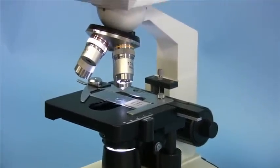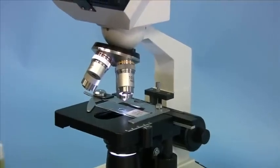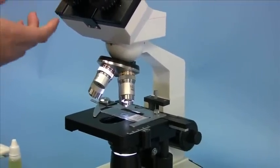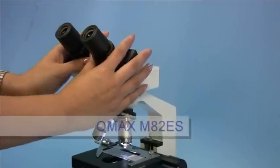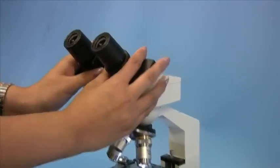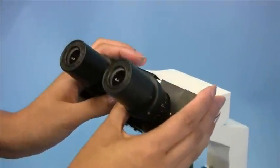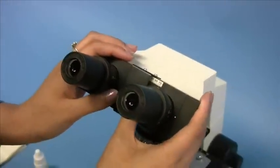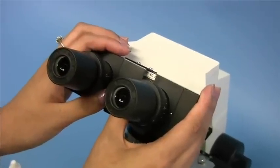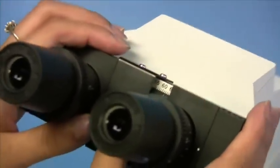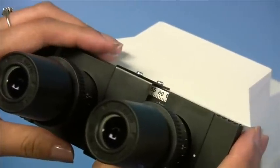Now you want to adjust the interpupillary distance. While observing through the eyepieces, hold both eyepiece tubes and slide in and out. When the distance is correct, the left and right field of view should converge to a single one. That is, you'll see a single image instead of two.